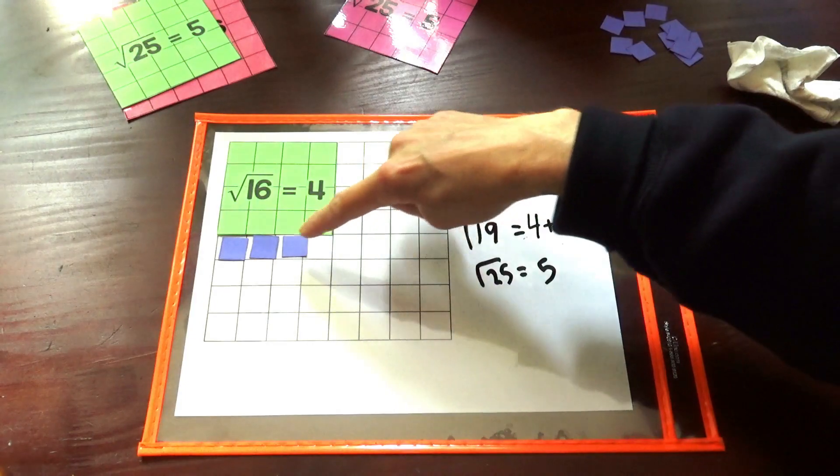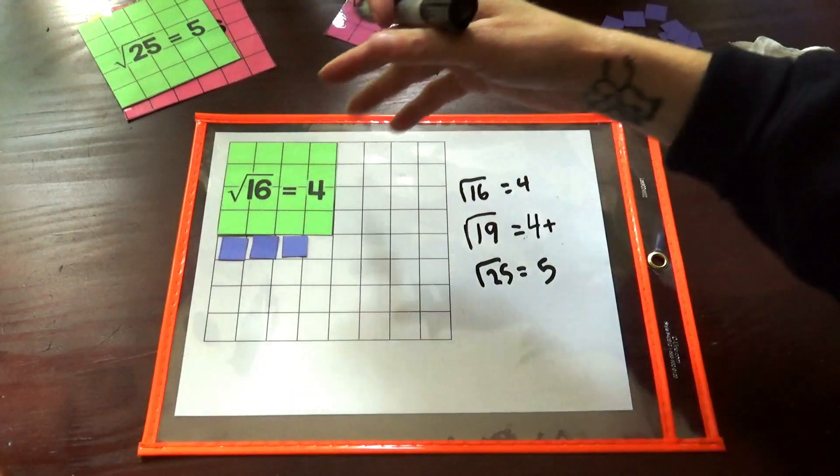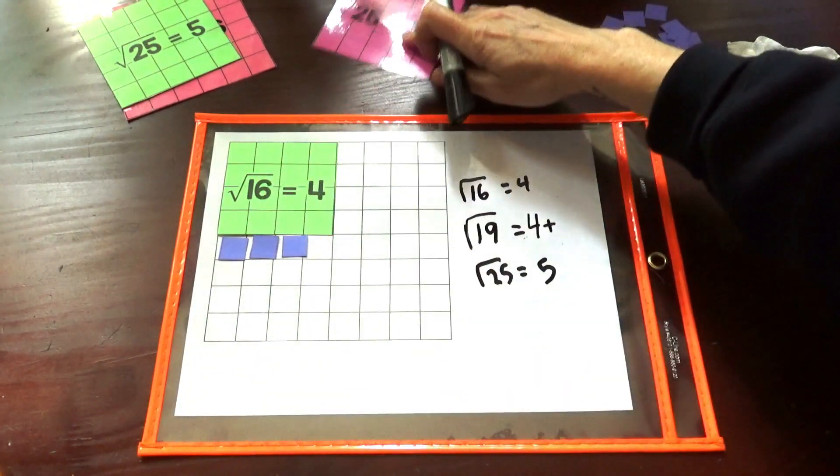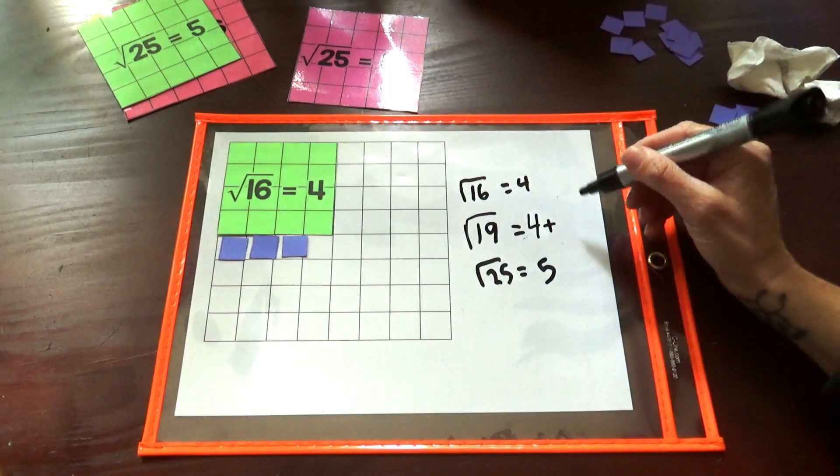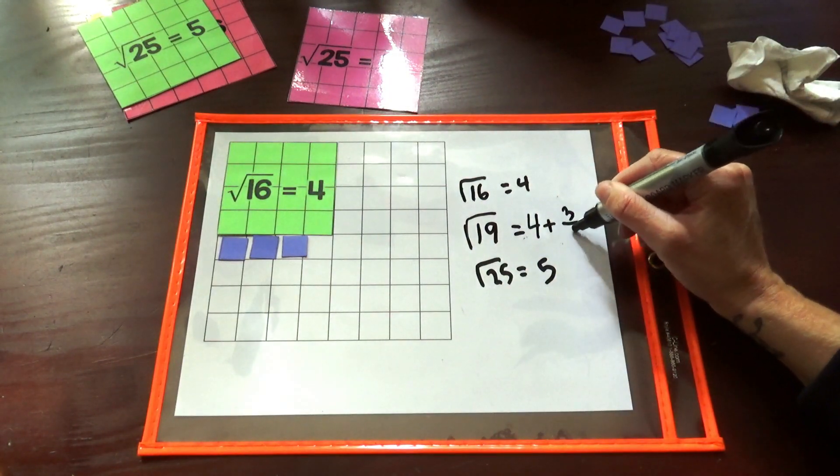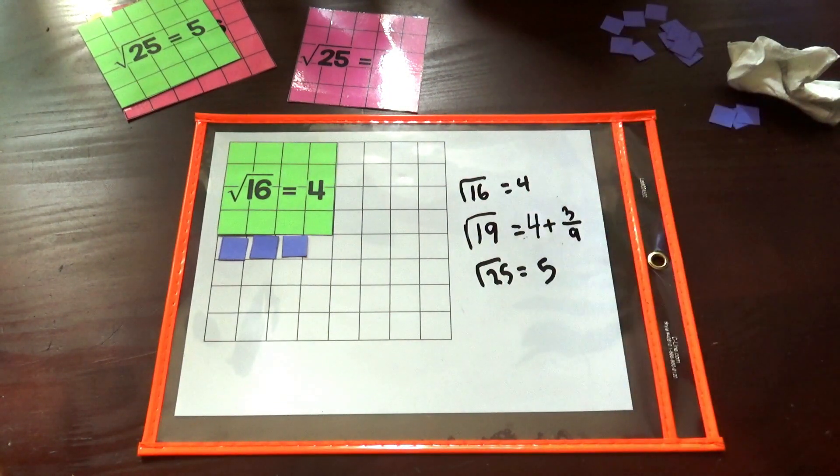So three of our nine squares that we would need to complete the square root of 25 are filled in. So three of the nine. And it turns out that four and one-third is a pretty good approximation for the square root of 19.